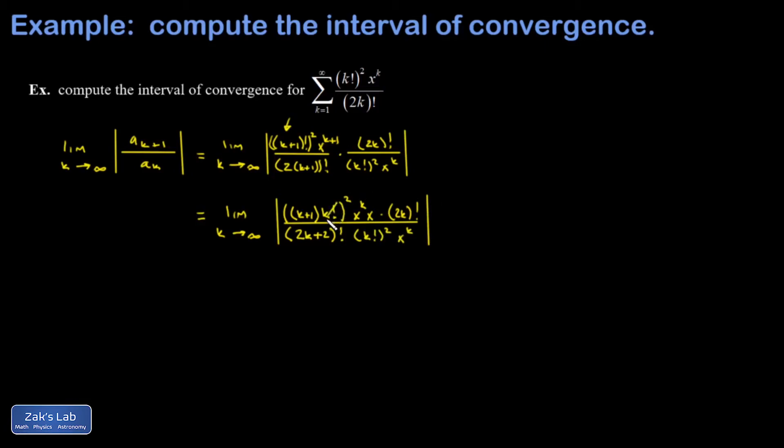Okay, things start to cancel out. I have k factorial squared in the numerator and the denominator, and I have x to the k in the numerator and denominator. So in my numerator I'm left with (k+1) quantity squared times 2k factorial.